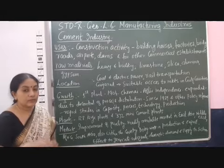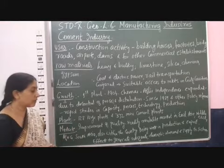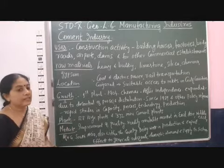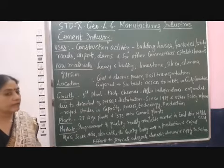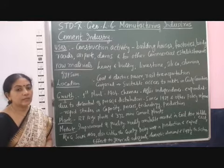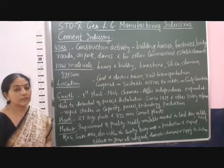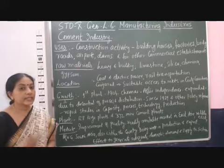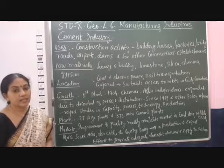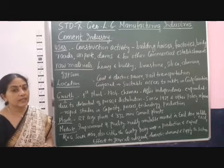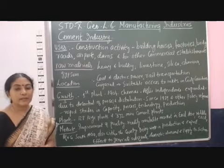Apart from exporting, we are also using a lot of the cement produced in our country ourselves. Overall, we are doing very well in cement industry production and export. Nowadays, efforts are made to do more and more construction work so that more cement will be used domestically, to increase domestic demand and supply so that the cement industry can sustain itself for a long time.